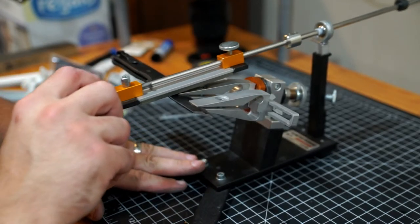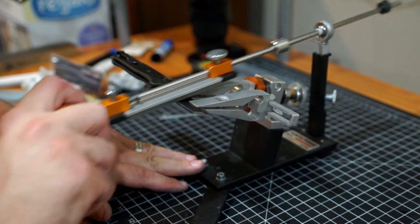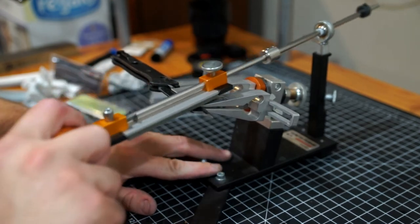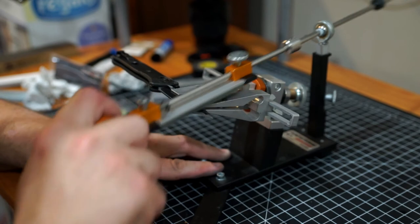We're just stropping with the 5 micron polishing film on both sides, just refining that edge.